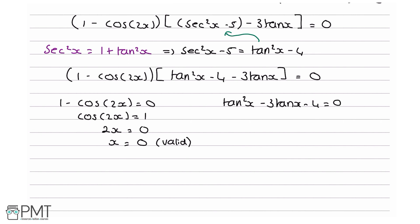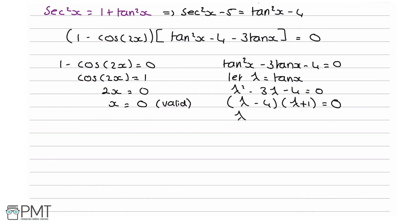The next step is to solve tan²x minus 3 tanx minus 4 equals 0, which is a quadratic in tanx. Substituting λ equal tanx, this becomes λ² minus 3λ minus 4 equals 0, which factors as (λ minus 4)(λ plus 1) equals 0, giving λ equals 4 or λ equals minus 1. Since λ equals tanx, we have tanx equals 4 or tanx equals minus 1.